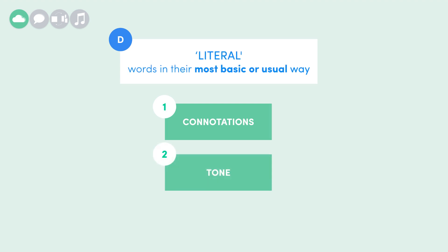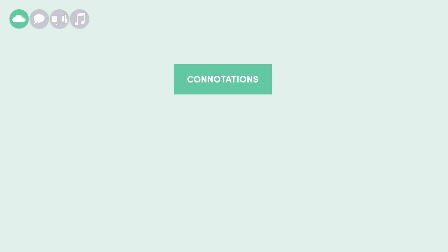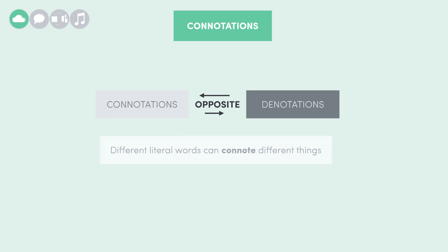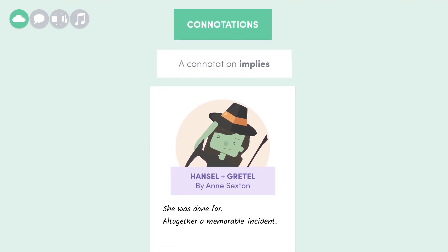Let's talk about connotations and then tone. When considering literal language, we can always think about the fact that different literal words can connote different things. Connotations are the opposite of denotations. A connotation implies something, while a denotation says it outright. Let's look at the connotations of the words in that closing comment on the witch's death: 'She was done for. Altogether, a memorable incident.'